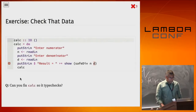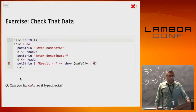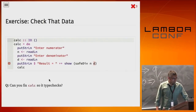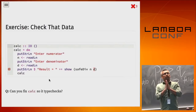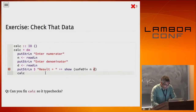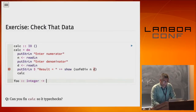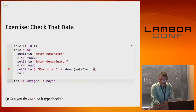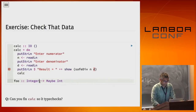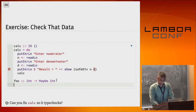How would we tweak calc so it type checks? We need a function that's going to return maybe something that's not zero. Foo takes as input an integer and returns a Maybe of an integer that is definitely not equal to zero. Then we should only call safe_div if this function returned a non-zero value. Foo of zero would be Nothing; foo of d would be Just d.